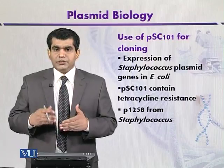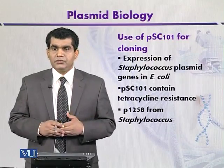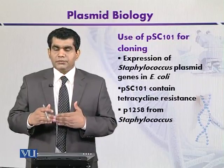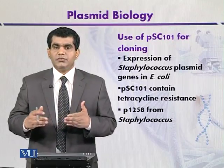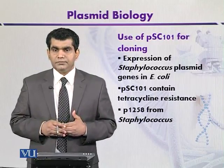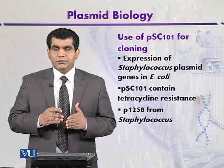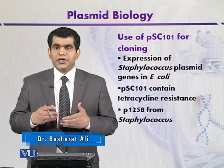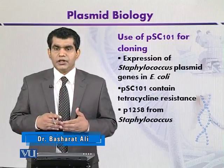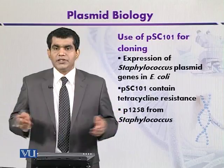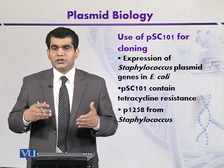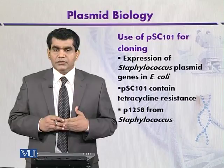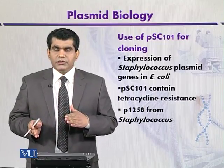This plasmid P-1258 is present in gram-positive cocci like Staphylococcus. So, genes from Staphylococcus plasmid can be cloned in PSC-101 and then expressed in E. coli. Plasmid P-1258 contains several determinants or traits that can be expressed in the recipient cells. These traits include ampicillin resistance, erythromycin resistance, and resistance to certain heavy metals — meaning mercury and cadmium. So these traits are present on the Staphylococcus plasmid.